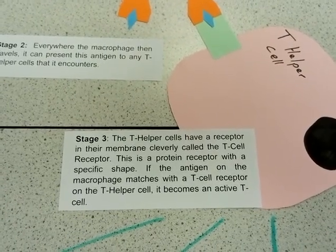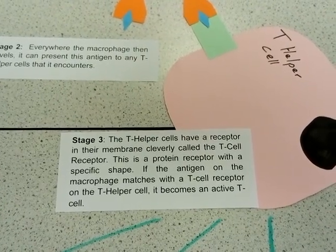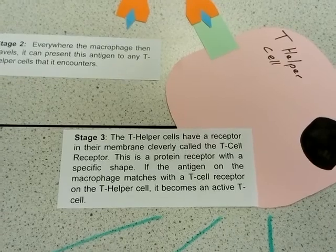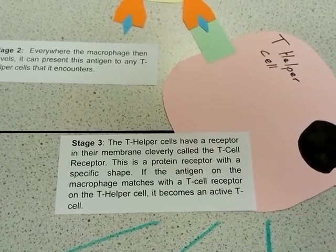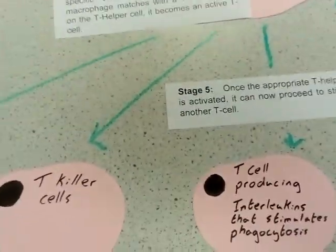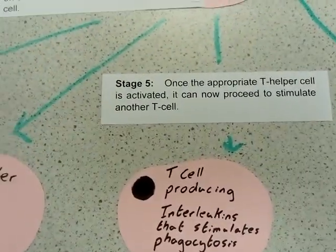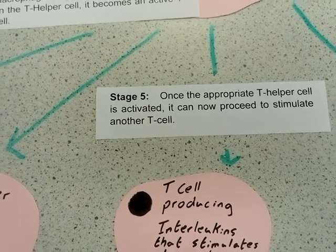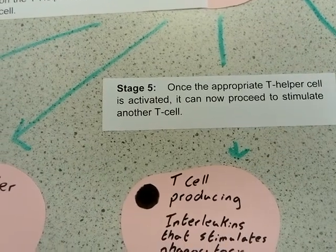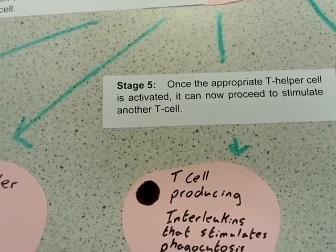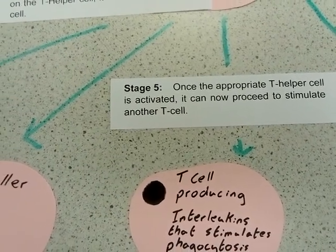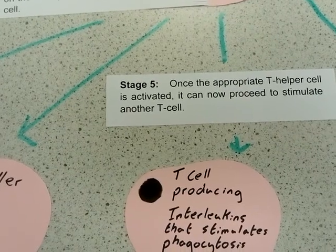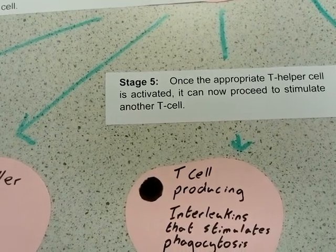Once a specific antigen is presented to it, that then activates the T-helper cell. The T-helper cell can then differentiate into a number of different types of cells that can go and help in the immune response.